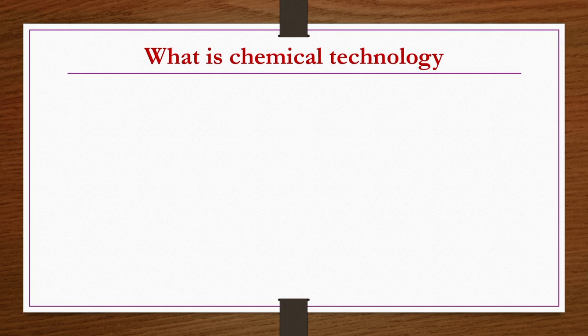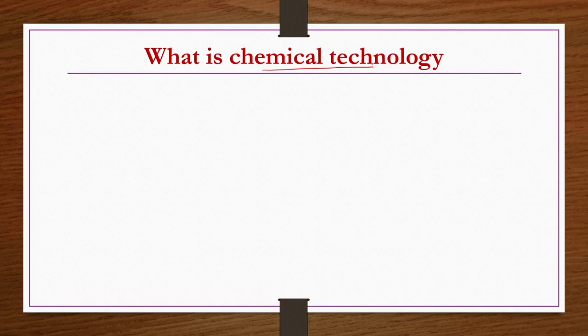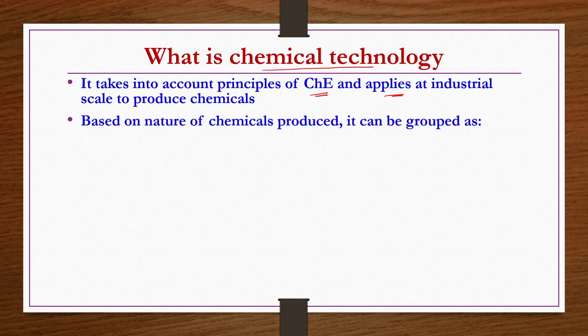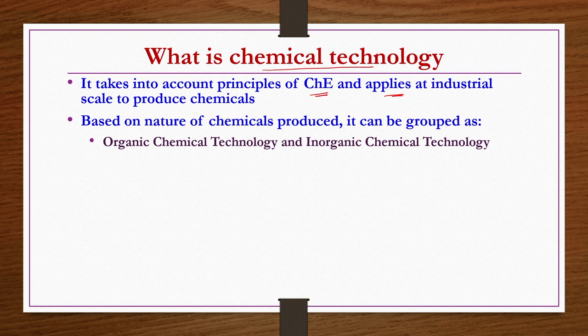Next is to understand what is chemical technology. Whether it is organic or inorganic chemical technology, chemical technology uses chemical engineering principles to produce certain chemicals in a profitable manner. It takes into account principles of chemical engineering and applies them at industrial scale. By the nature of the chemicals produced, chemical technology may be grouped as organic chemical technology and inorganic chemical technology.